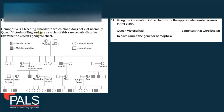Hemophilia is a bleeding disorder where blood does not clot normally. Queen Victoria of England was a carrier of this rare genetic disorder. Examine the queen's pedigree chart. This is assumed knowledge — you should know how to read a pedigree chart. If unsure, revise the topic of inheritance and look at how to do Punnett squares. Check our YouTube channel for a screencast on that topic.